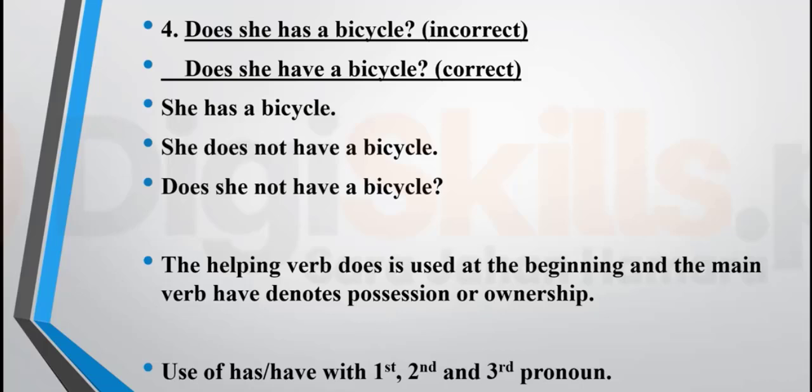But when the sentence converts to negative or question form, you say 'she does not have' or 'does she have?' or 'does she not have?' The helping verb 'does' comes to the start of the sentence. 'Have' and 'has' denote possession or ownership. With 'does' or 'did,' you must use the first form of the verb. Practice the use of 'has' and 'have' with first, second, and third person — it is very important.